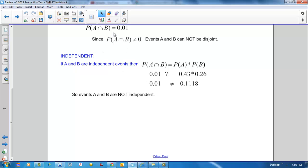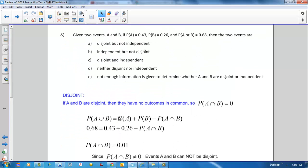We determined the probability of A and B was 0.01. We're given the probability of A and B. We see that their product does not equal the probability of A and B, so events A and B are not independent. So it looks like our choice is D, neither disjoint nor independent.